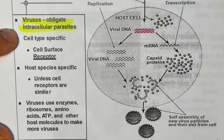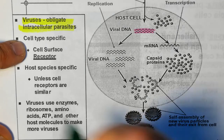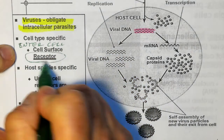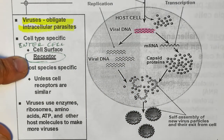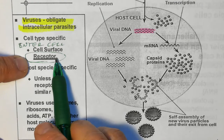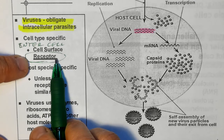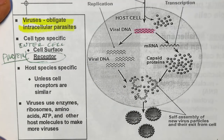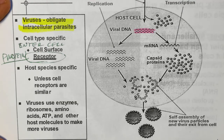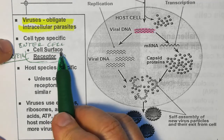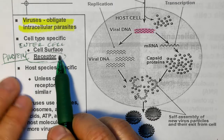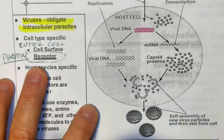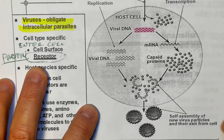Viruses are very specific for the type of cells because to enter a cell they have to attach to a receptor — a protein in the surface of the cell. These cell surface receptors are not receptors for a virus at all; these proteins on the surface of our cells do other jobs. The viruses are kind of hijacking them and using them to sneakily get into our cells. To enter a cell, you have to have a specific receptor in that membrane, and different types of cells have different receptors in their membranes depending on the function of the cell.